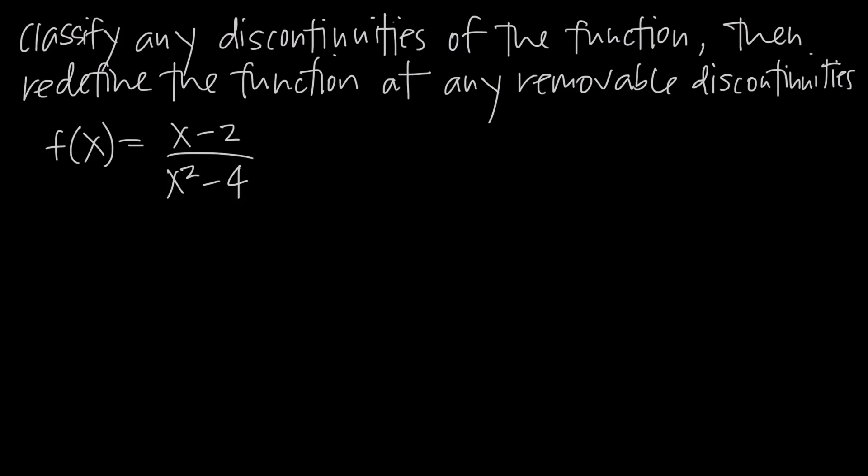In this video, we're talking about removable discontinuities, which are a specific type of discontinuity. When we talk about a discontinuity in a function, we're talking about a point at which the function is undefined — that could be where the function has a hole, some kind of a gap, a break, a jump, an asymptote, something like that. So wherever the function is undefined, we're going to have a discontinuity there.